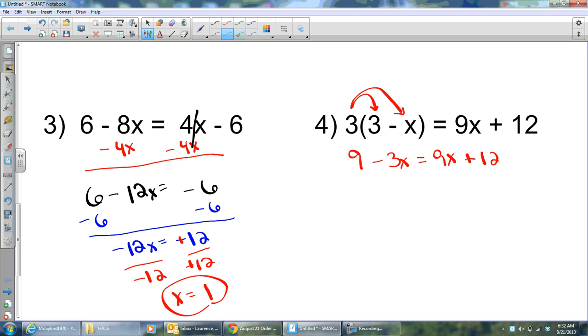That'll be called 9x plus 12. I've got x's on both sides. I don't like that. I'm going to subtract off one of the x's. And this time, I think I'm going to subtract off this guy. I'm going to subtract off a negative 3x. But subtracting a negative is like adding a positive, right? So, I'm going to add 3x to both sides. Yeah. And I'll get 9. Those will have cancelled. I'll have 12x. And I'll have 12.